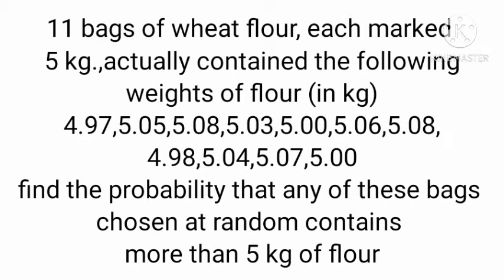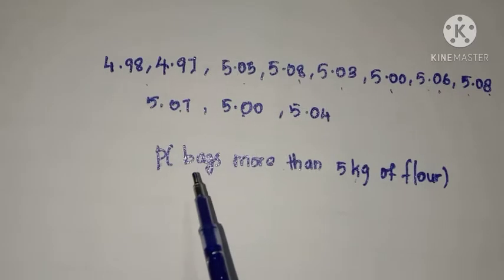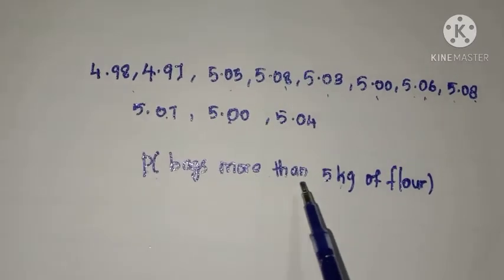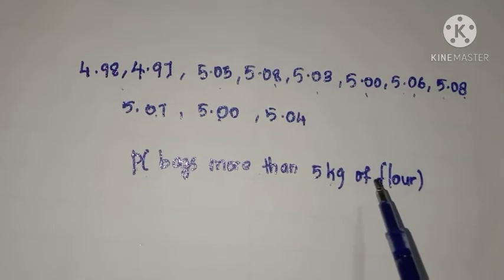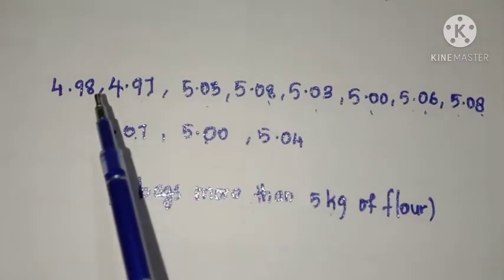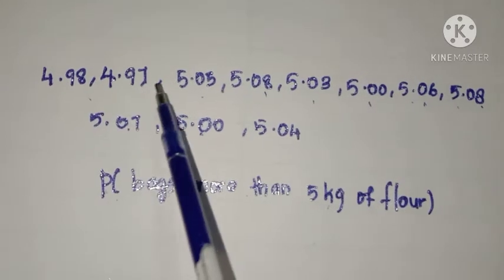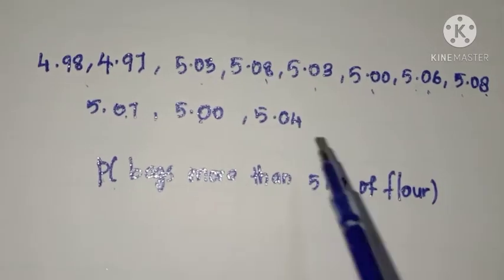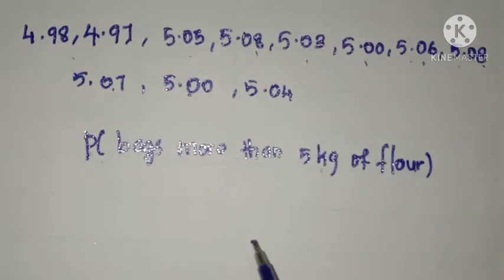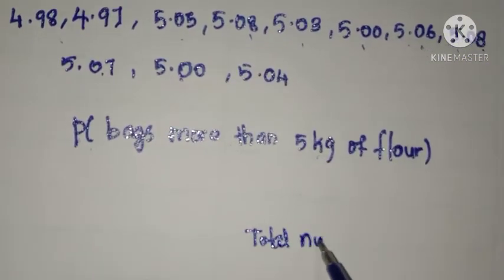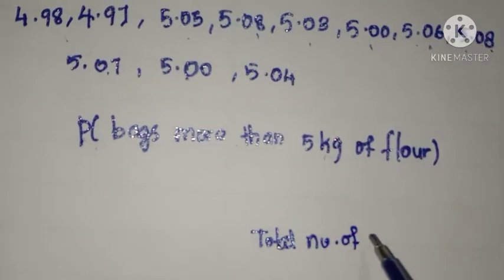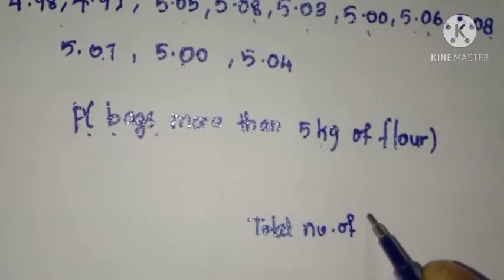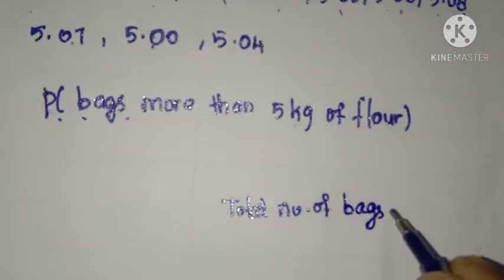There are 11 bags of wheat flour. Our question is: what is the probability that a bag contains more than 5 kg of flour? Total number of bags is equal to 11, that is the total number of cases.